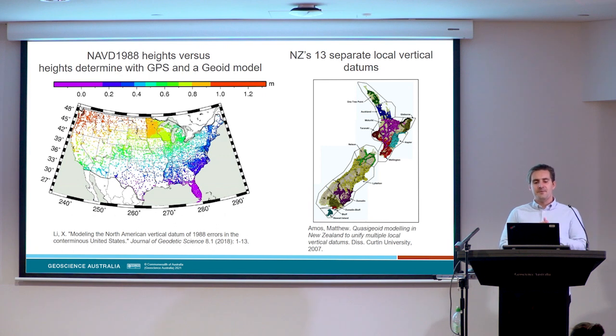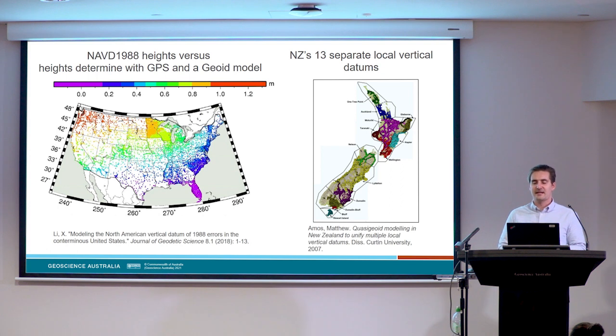AVWS heights are available anywhere in Australia and seamlessly on and offshore, whereas AHD heights are really only defined on top of one of those benchmarks. In practice, this release of AVWS means we've made the AGQG geoid model publicly available in a variety of file formats, published all the supporting documentation that details how to determine AVWS heights, and we're supporting their use with our online tools.